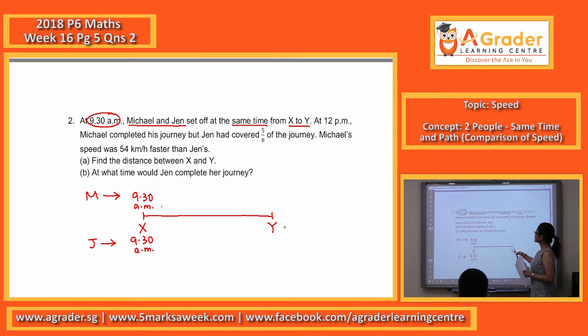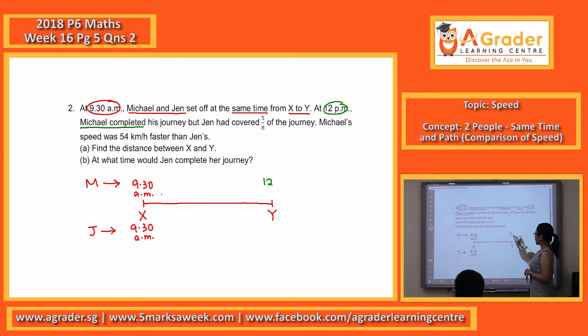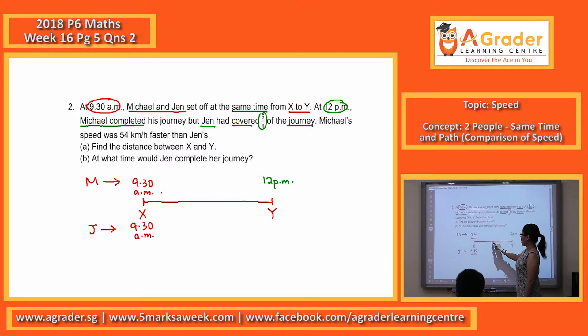Next, at 12 p.m., Michael completed his journey. So that means at 12 p.m. here, Michael reached Y, but Jen had covered five-eighths of the journey. So our whole journey will be made up a total of eight units here, so I'll make this into eight.